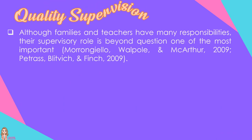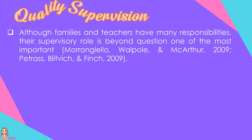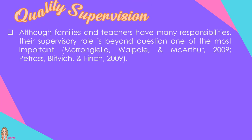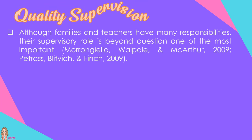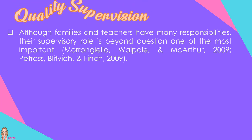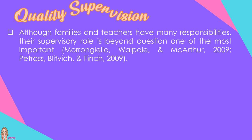Quality Supervision: Although families and teachers have many responsibilities, their supervisory role is beyond question one of the most important. Children depend on responsible adult guidance for protection as well as for learning appropriate safety behaviors. The younger children are, the more comprehensive and protective this supervision must be. As children gain additional motor coordination, cognitive skill, and experience in handling potentially dangerous situations, adult supervision can become less restrictive.